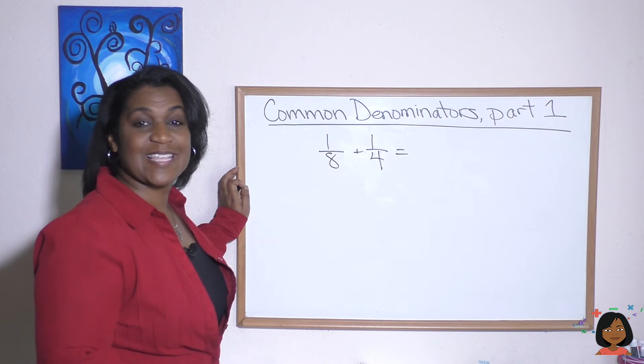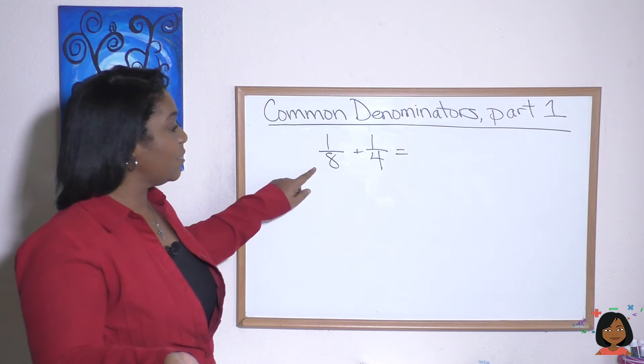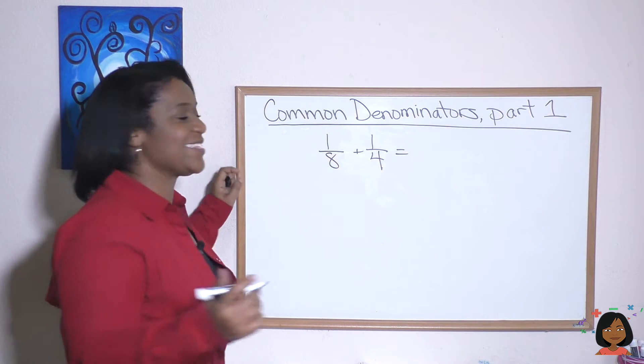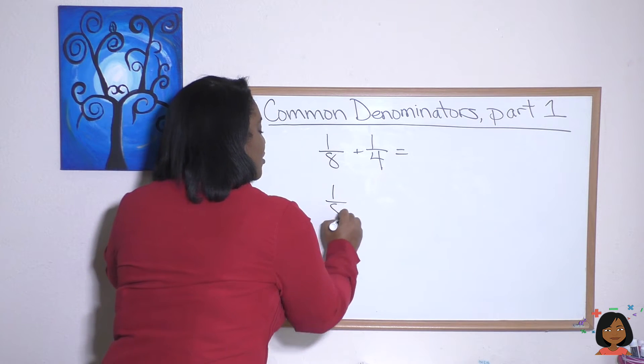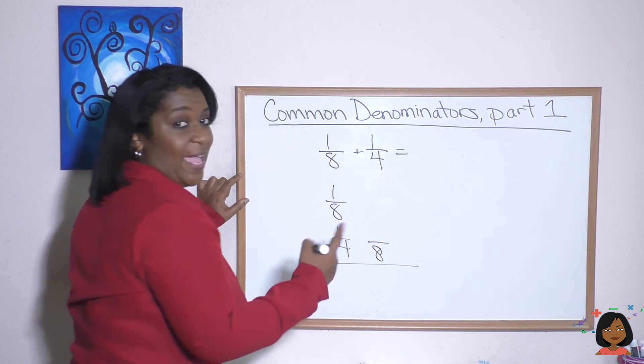Let's try one last example. Here we have one-eighth plus one-fourth. What's going to be the common denominator? Between eight and four, we know that eight is the common denominator. So let's rewrite this whole thing, changing the one-fourth to two-eighths.